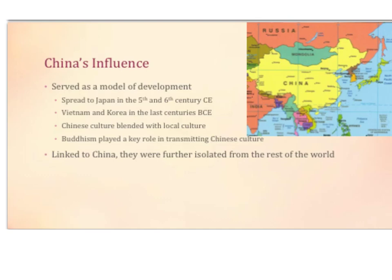China served as a model of development, and it spread to Japan in the 5th and 6th century BCE, and to Vietnam and Korea in the last centuries BCE. Chinese culture blended with local culture, and Buddhism played a key role in transmitting Chinese culture. They were all linked to China, and in doing so, they were further isolated from the rest of the world. Notice the size of China and how it serves as a barrier to this area of the world.